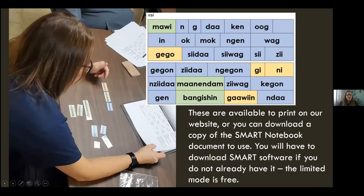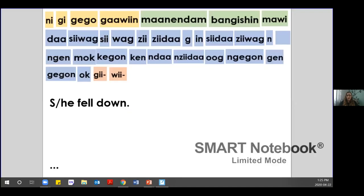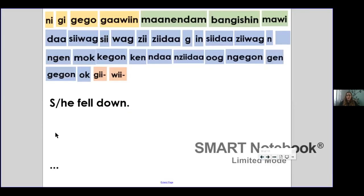If you were with us in the last class, we had the conjugation pieces uploaded for you. Again, we're going to have the VAI ones available. If you had a chance to make them, they are available on our website, or you can download the Smart Notebook document.